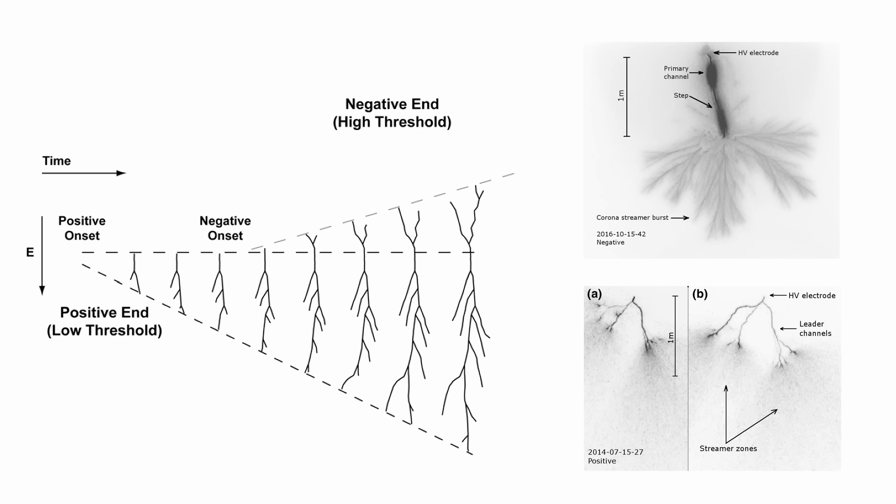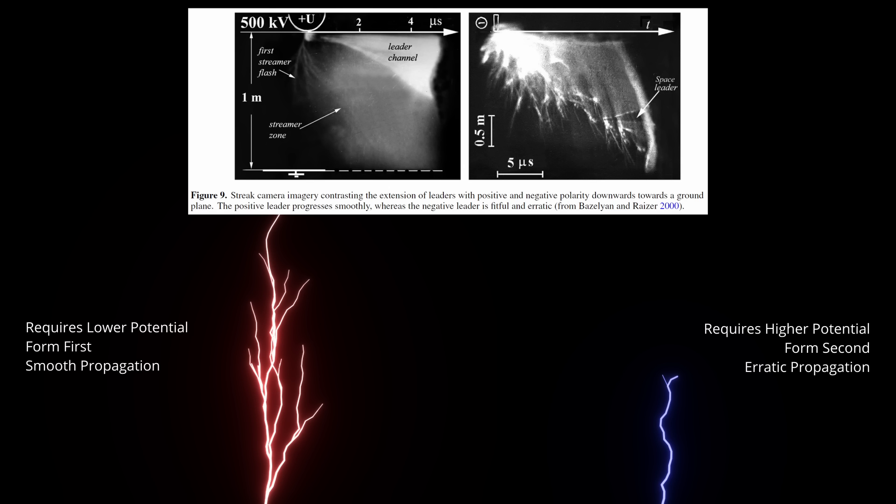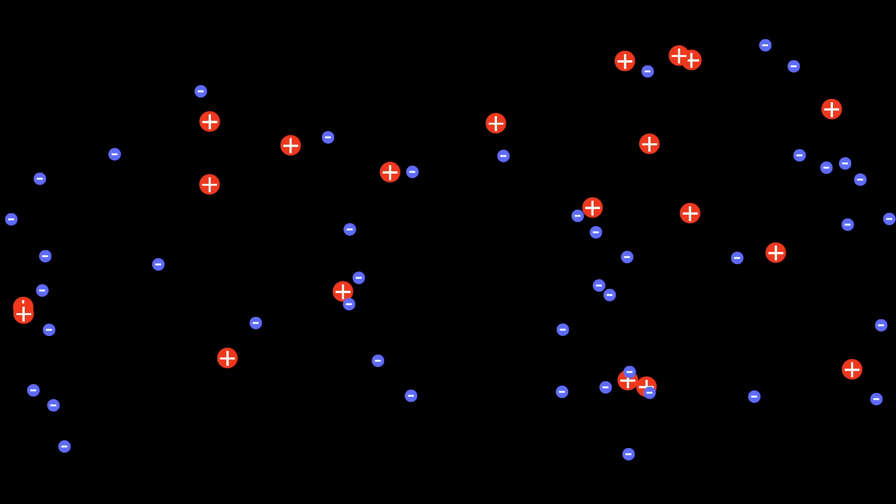Key insights may be found in laboratory discharges within 1-10 meter gaps, revealing a clear asymmetry in the behavior of positive and negative leaders in point-to-plane discharge. Positive leaders smoothly progress across the air gap from the point, while negative leaders requiring high voltage jump in steps and exhibit more erratic behavior.